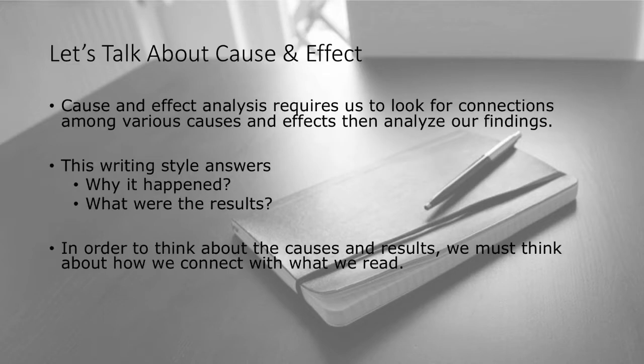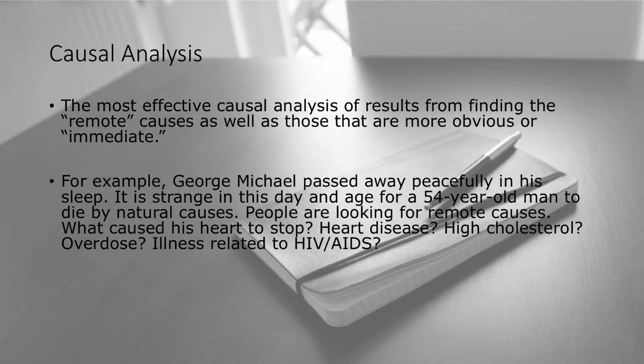So cause and effect writing. Cause and effect analysis requires us to look for connections among various causes and effects, and then analyze our findings. The whole purpose of cause and effect is not to argue or persuade anybody — it's to look at the reasons why something happened and what the results were. The causal analysis is the most effective type of causal writing because it goes from finding remote causes as well as the more obvious and immediate ones.